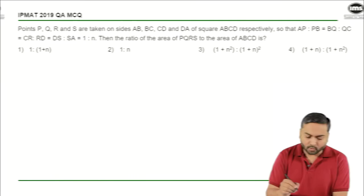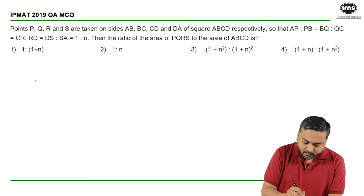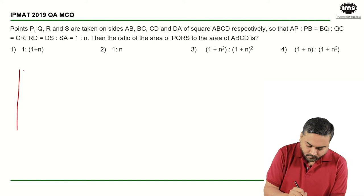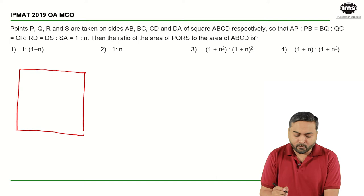So what is given to us? There is a square ABCD. And on this square, there are four points P, Q, R and S respectively. Let us name them as ABCD.